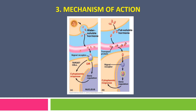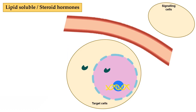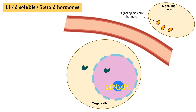We have discussed earlier that there are lipid-soluble hormones and water-soluble hormones. Now let's look at their mechanism of action. First, let's look at lipid-soluble hormone or steroid hormone. On the top right is the signaling cell, and at the bottom is the target cell. The signaling cell secretes a signaling molecule, which is the hormone. Due to its solubility in lipid, it can simply cross the lipid bilayer.